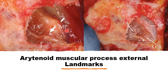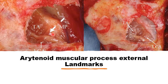The fibers of the posterior cricoarytenoid, the lateral cricoarytenoid, and the thyroarytenoid muscles are visible. This arrow marks where sutures can be placed in order to rotate the muscular process forwards and medially to effect good vocal fold closure.